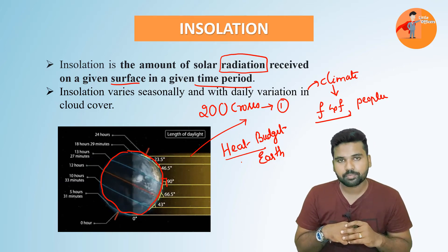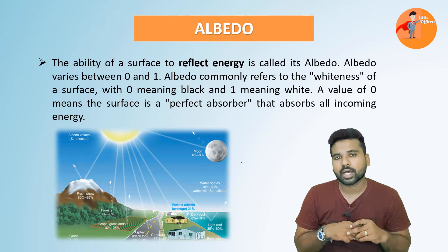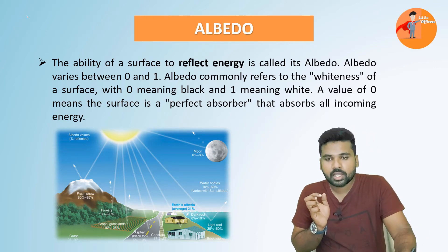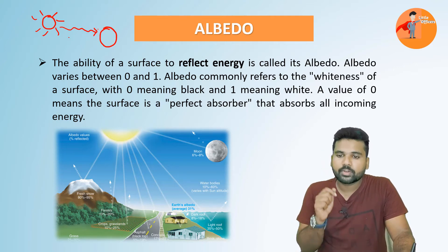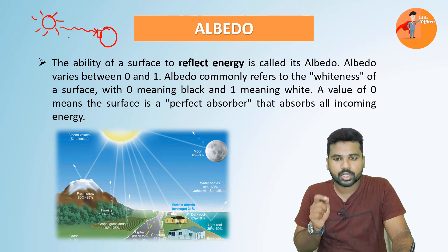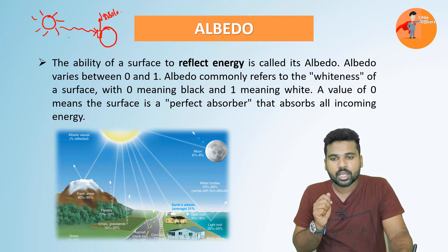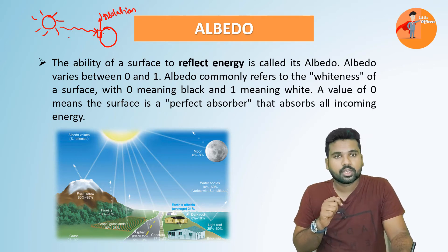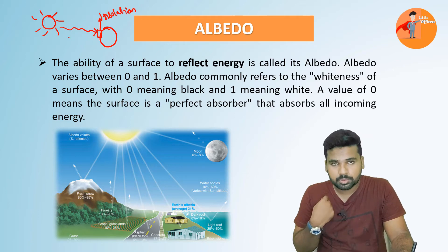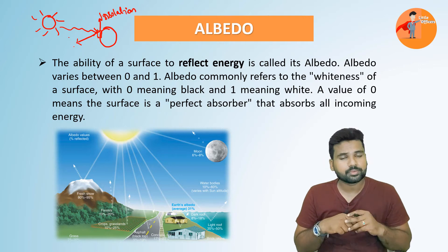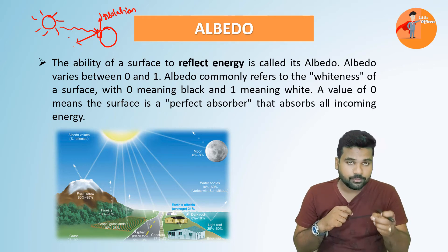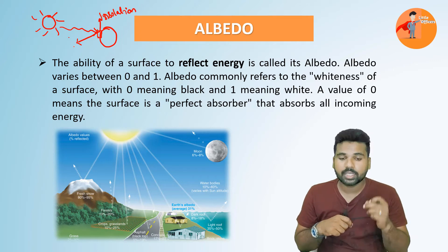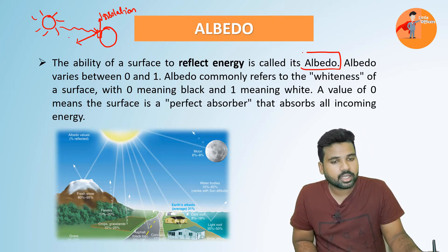This is insolation. Now, having understood insolation, what is the meaning of albedo? There is a source of energy — the sun — and the radiation coming from it falls on the surface of the earth. Whatever amount is received by a particular surface, we call it insolation. After receiving this energy, the energy will either be absorbed by that surface or it will be reflected. The ability of a surface to reflect whatever energy it has received is generally called its albedo.